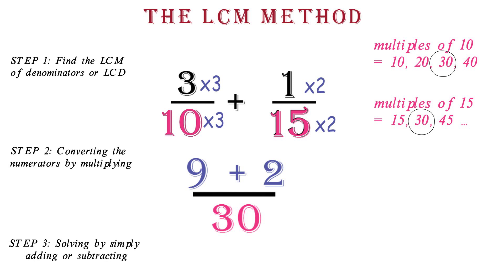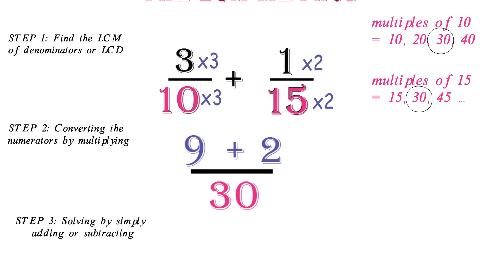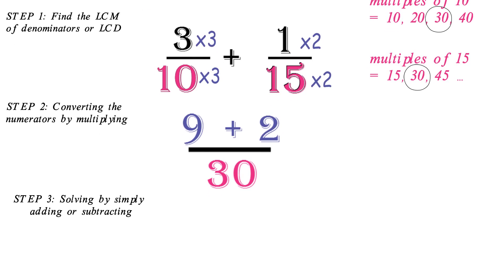Step 3: solving by simply adding or subtracting. We can now add the numerators: 9 plus 2 to get 11. Our final answer is therefore 11 over 30.